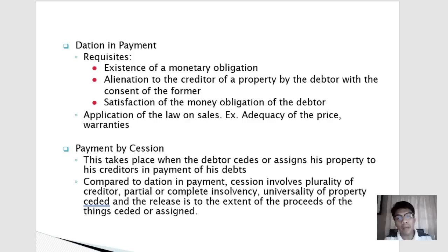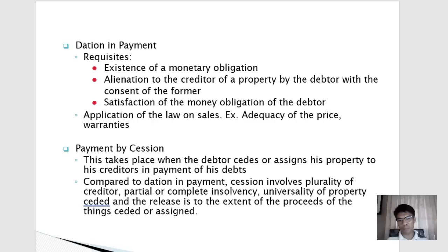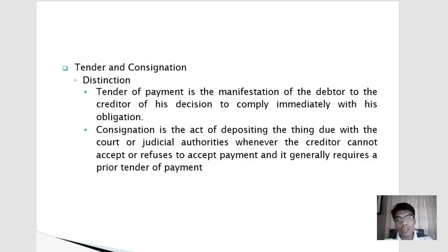Payment by cession takes place when the debtor cedes or assigns his property to his creditors by way of payment of his debts. Compared to dation in payment, cession involves a plurality of creditors, partial or complete insolvency, universality of property ceded, and release to the extent of the proceeds of the things ceded. This is similar to a bankruptcy proceeding where an insolvent debtor offers his properties to all his creditors to share from the proceeds.